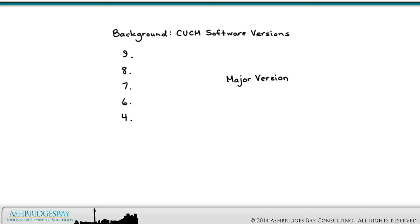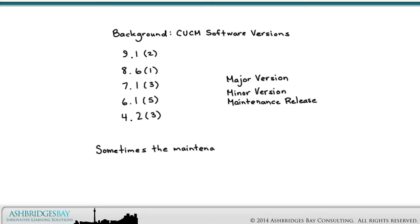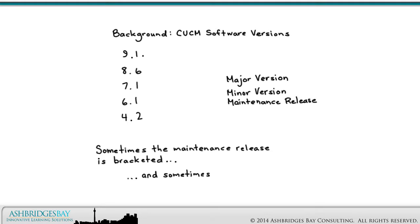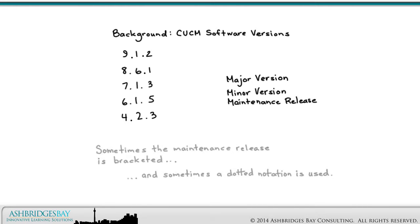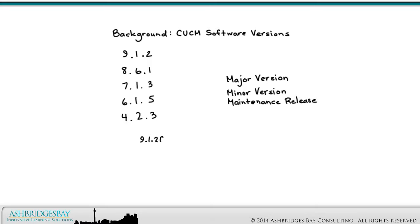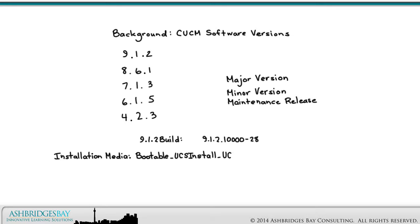Licenses are bound to the major version. Next comes the minor version, which has no effect on licensing. And finally, we have the maintenance release — sometimes it is bracketed, and sometimes a dotted notation is used. We also have the build, which represents the exact software release. A DRS backup can only be restored to a cluster with the exact same build. The build will be part of the name of the installation media. This is the build that came with the ABAY Labs BE 6000s and is what we'll use in the labs.